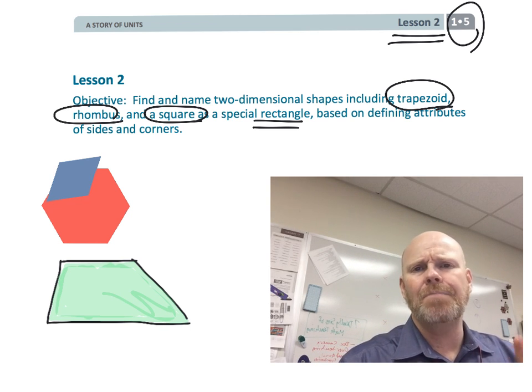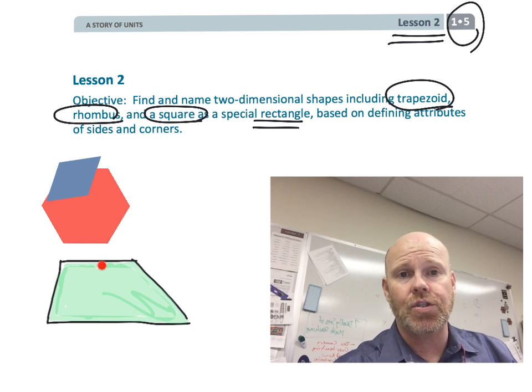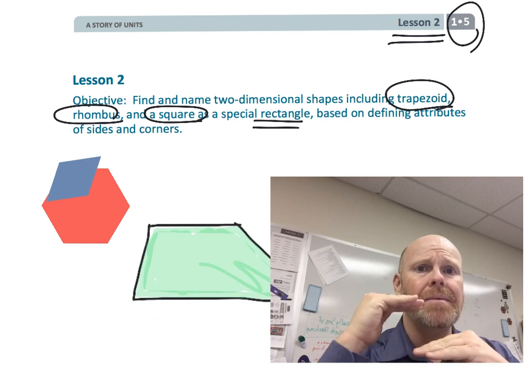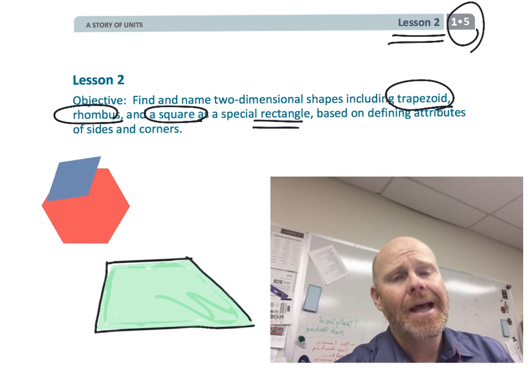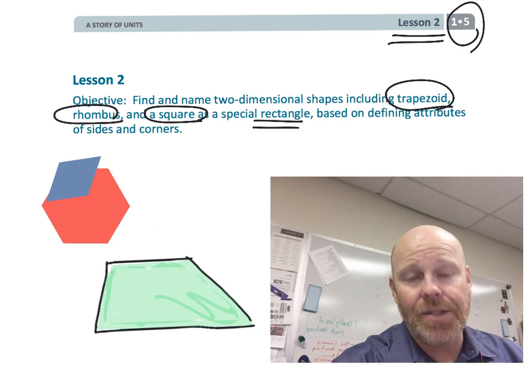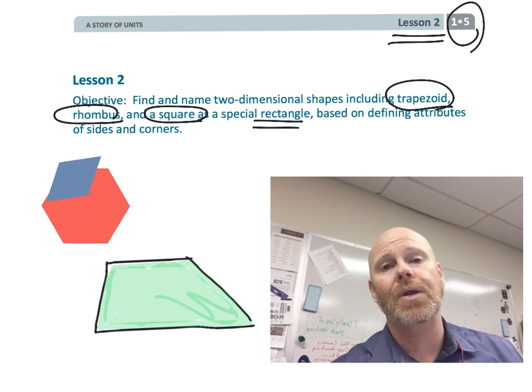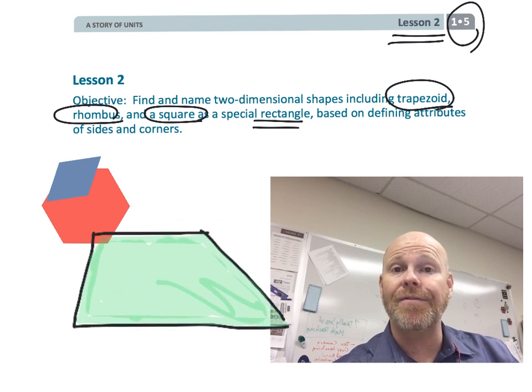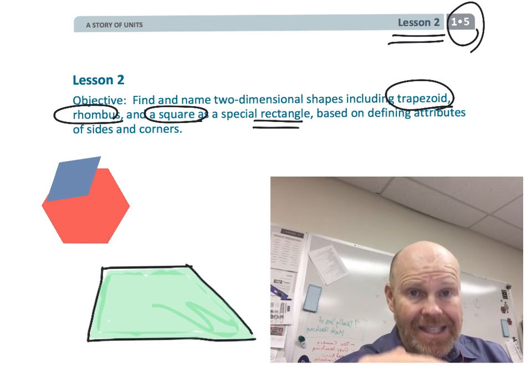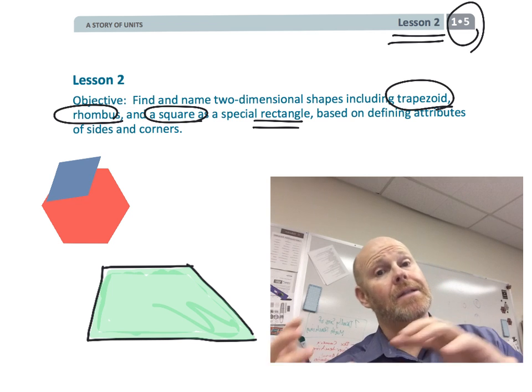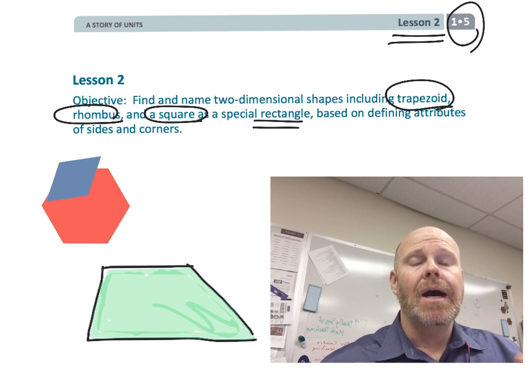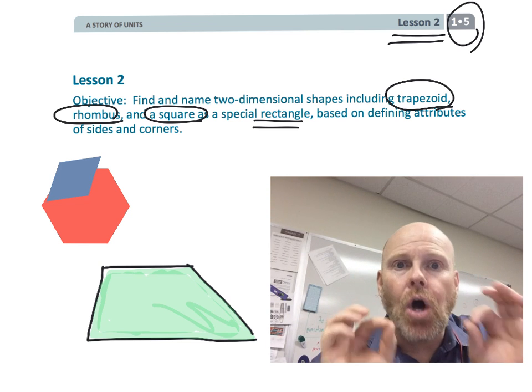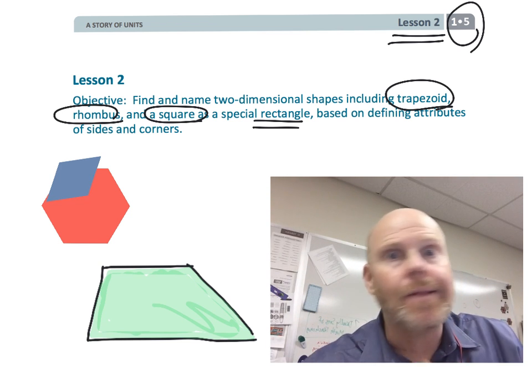Now, here's the key thing about that trapezoid. A lot of parents and teachers think of a trapezoid as a figure that has exactly one pair of parallel lines. That is one way to define a trapezoid, but in Eureka Math, we're going to be defining it a little bit differently. We're going to be defining a trapezoid as a figure that has at least one pair of parallel lines, which means a square, meaning it has two pairs of parallel lines, is also a trapezoid. Don't let that freak you out.